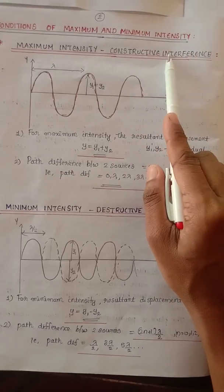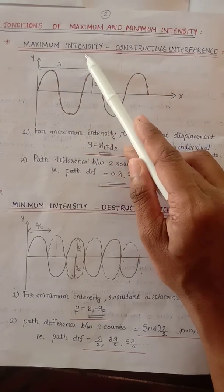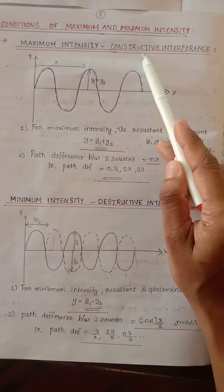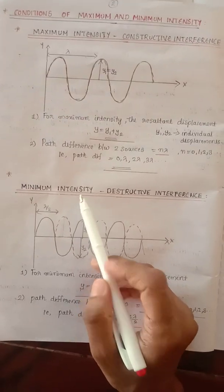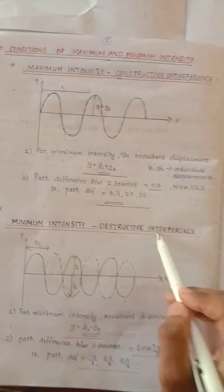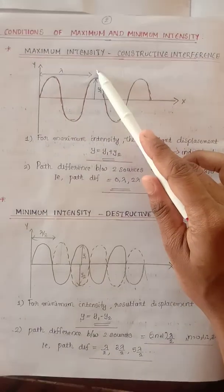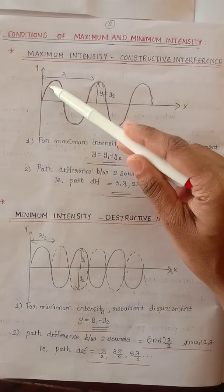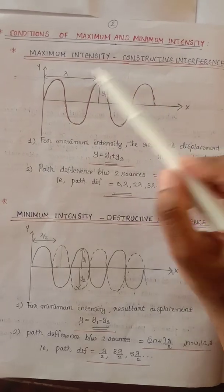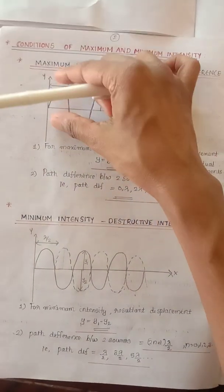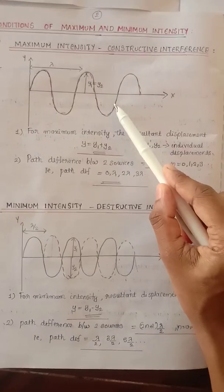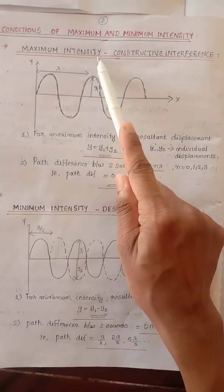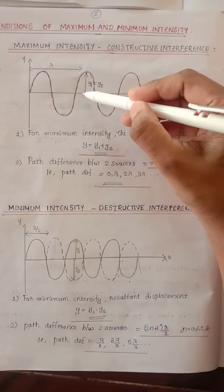Constructive interference is the interference in which we obtain maximum intensity. After the process of interference, maximum intensity gives constructive interference; minimum intensity gives destructive interference. In constructive interference, when we get maximum intensity, suppose the first wave and the second wave superimpose, that interference is known as constructive interference.